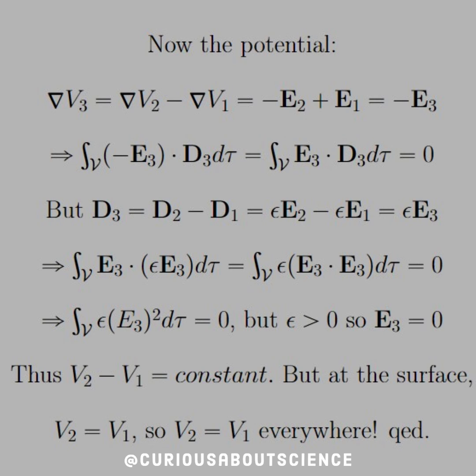Again, all of that's equal to 0. But we know that epsilon has to be greater than 0, so that now infers that E3 has to be 0. But if E3 is 0, when we integrate backwards to find a potential, that just tells us that the integral of 0 is a constant.